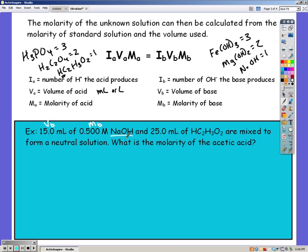So here we have Vb, Mb, and sodium hydroxide has an Ib of 1. Our volume of acid, acetic acid, has an Ia of 1. And we're looking for the molarity of the acid. So plugging my values into the equation above.